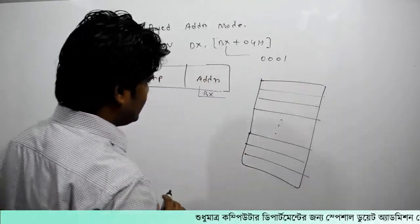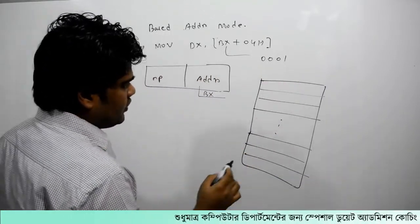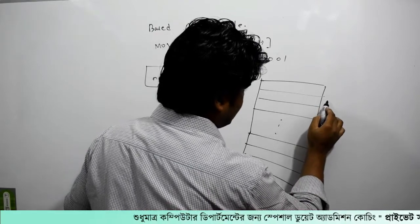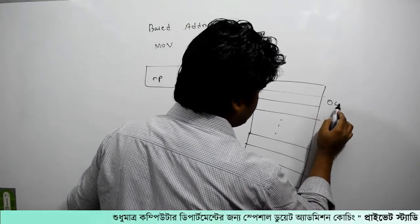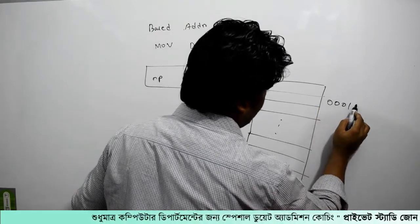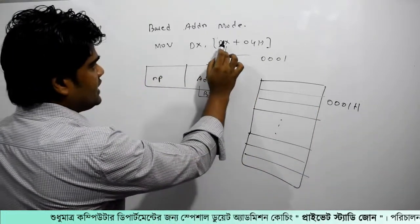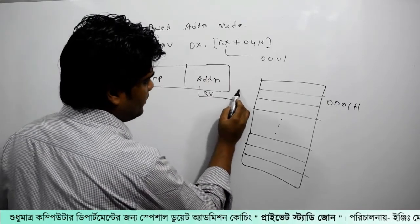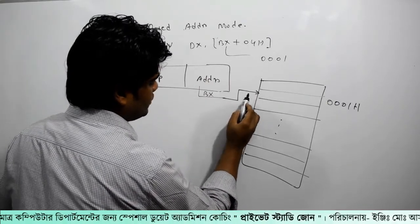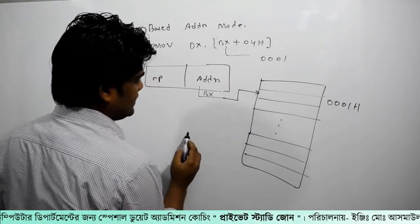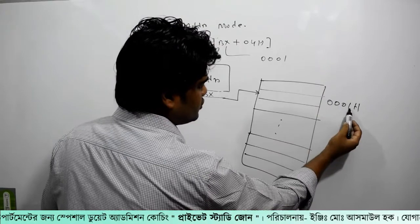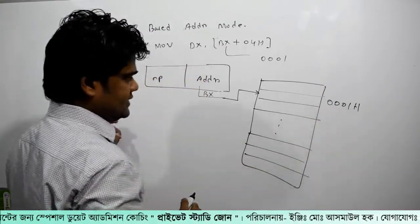BX has another memory location. Between memory locations, it is 0,001 — indicating the next sequential memory address used in this addressing mode.